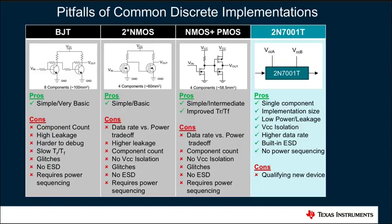In contrast to discrete implementations, the 2N7001T allows system designers to use a single component to implement a unidirectional level shifting function with the added benefits of smaller implementation size, lower leakage, VCC isolation, support for higher data rates, built-in ESD protection, and worry-free power sequencing. Overall, the 2N7001T provides a much more robust solution than these different discrete implementations of IO level shifting, and should be considered whenever implementing any sort of push-pull unidirectional level shifting solution.